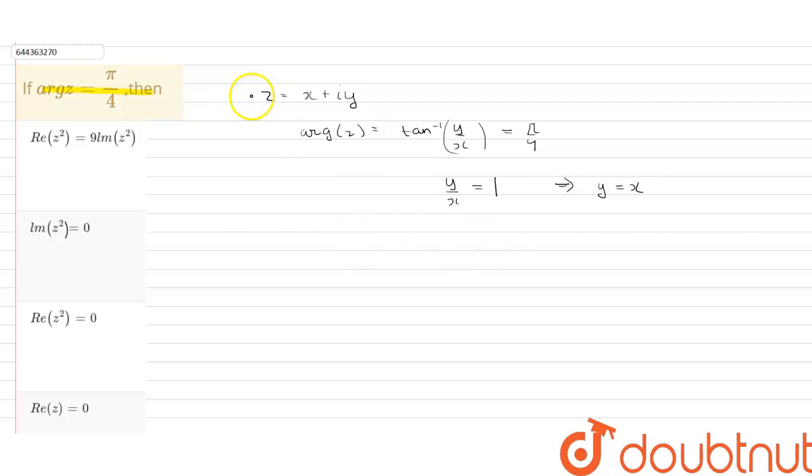So we can say that z equals x plus iota x. Therefore z squared equals x squared plus iota squared x squared plus 2x squared iota.